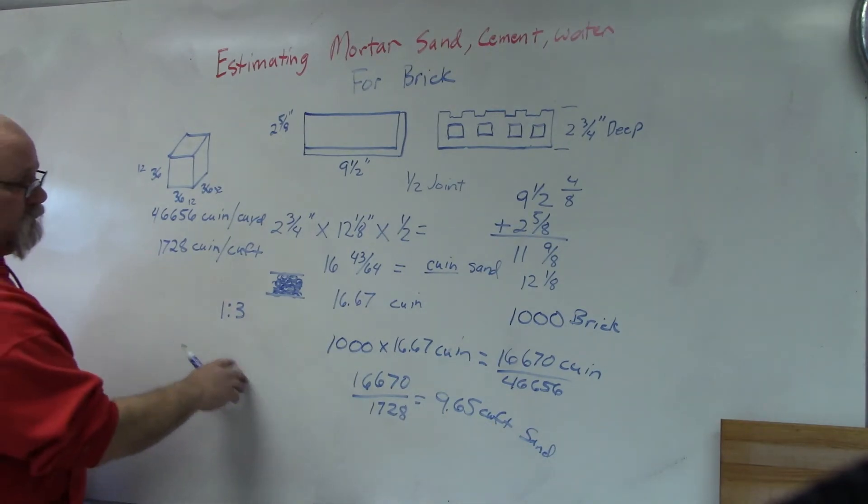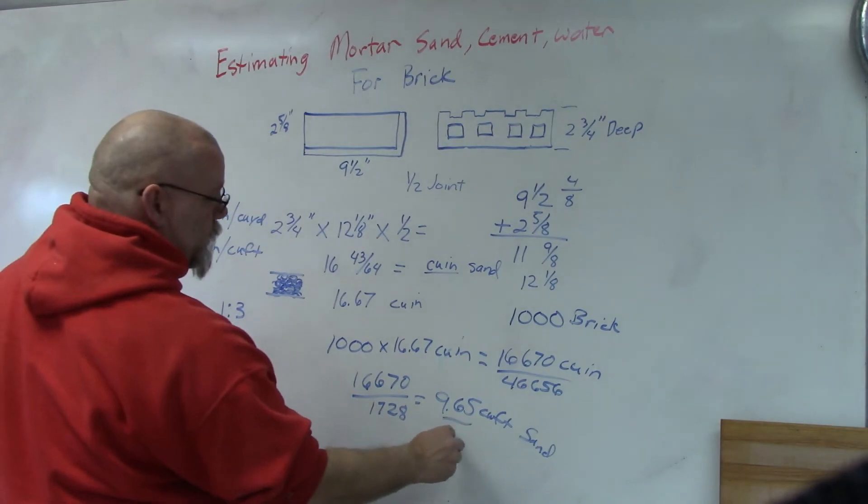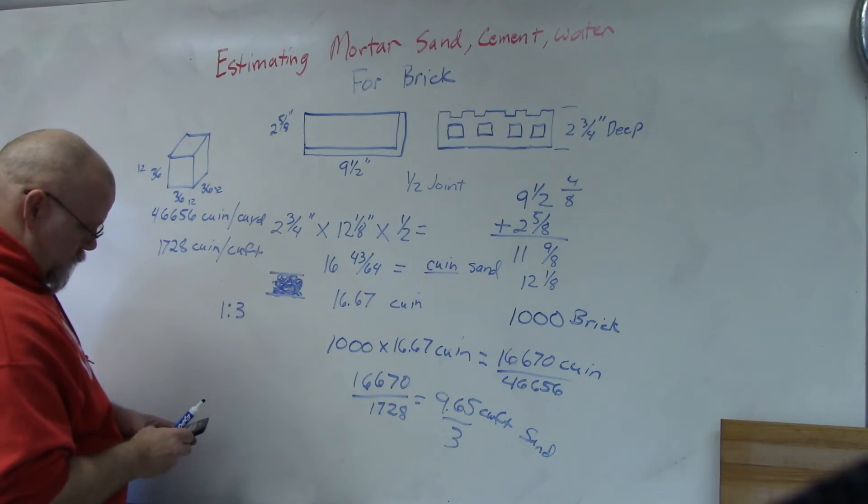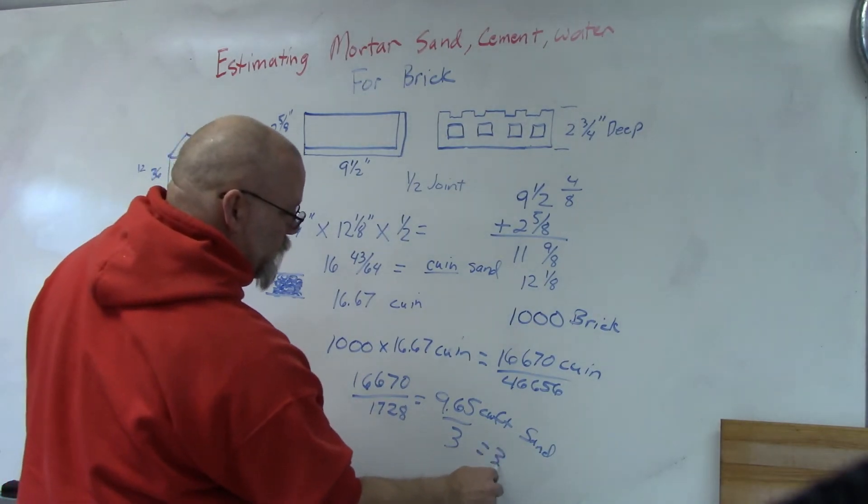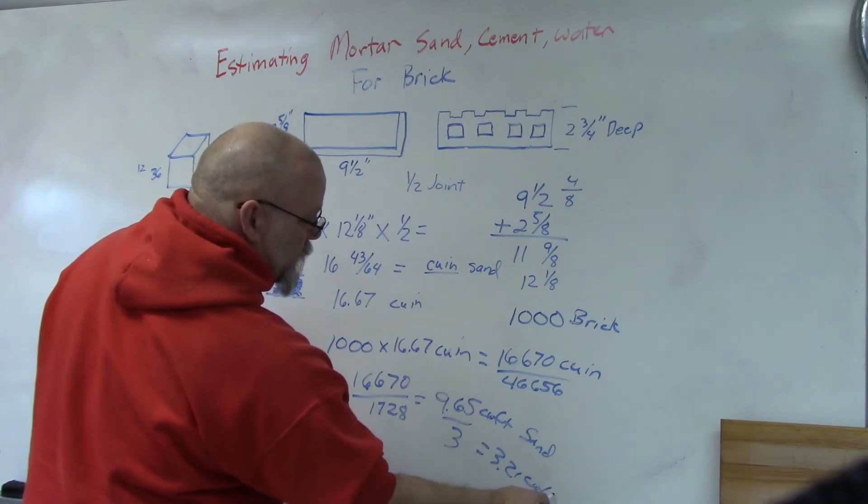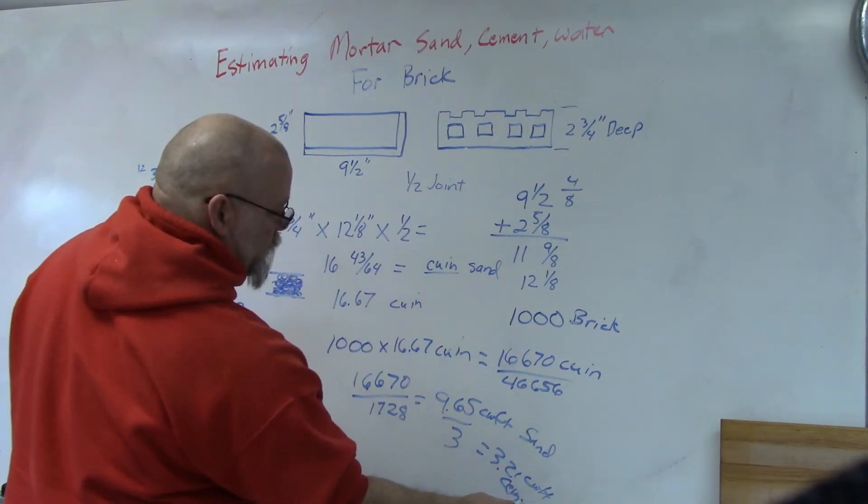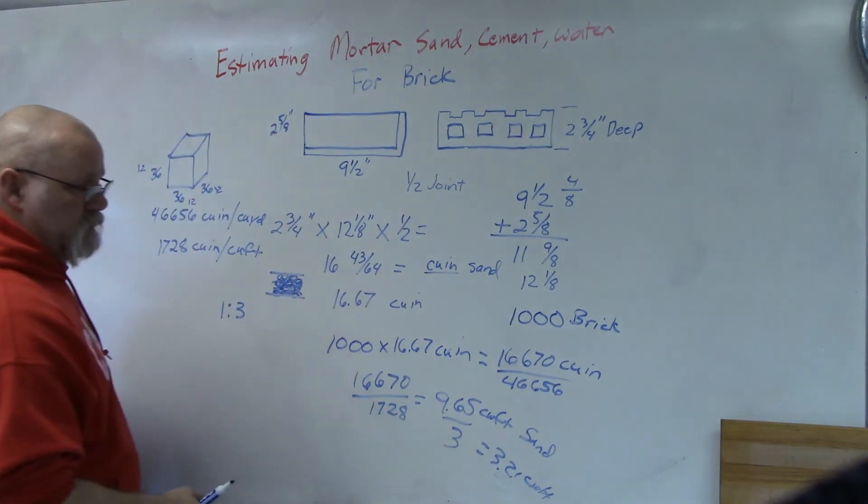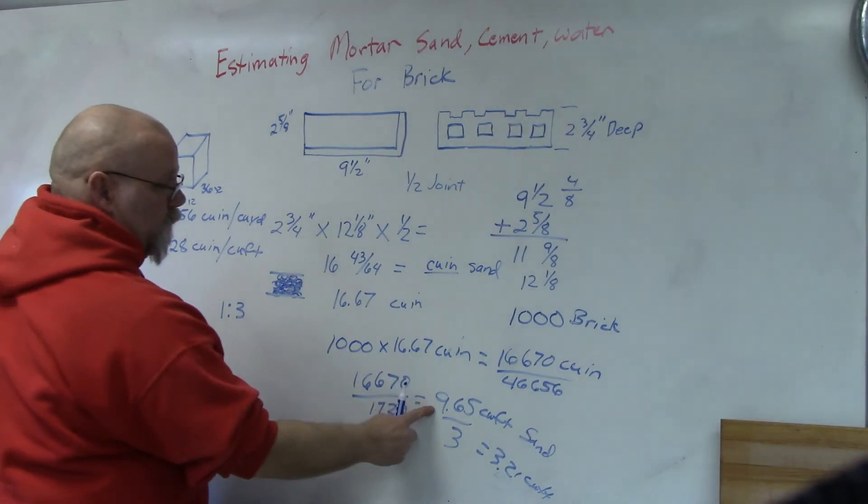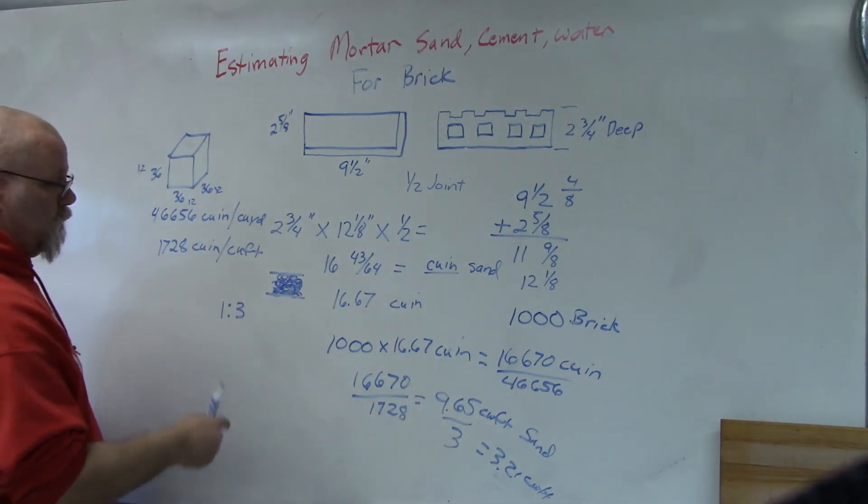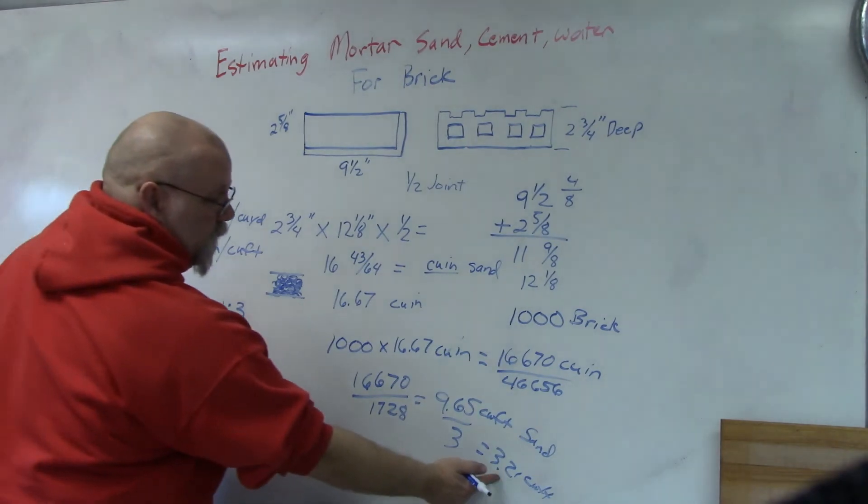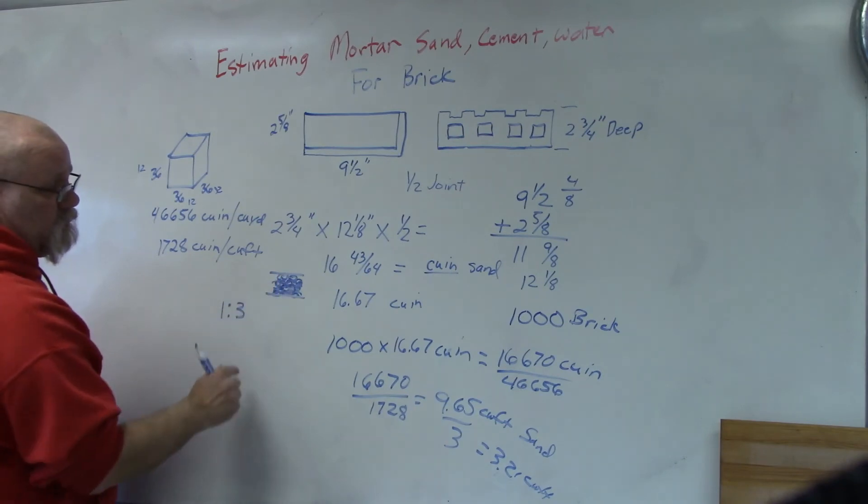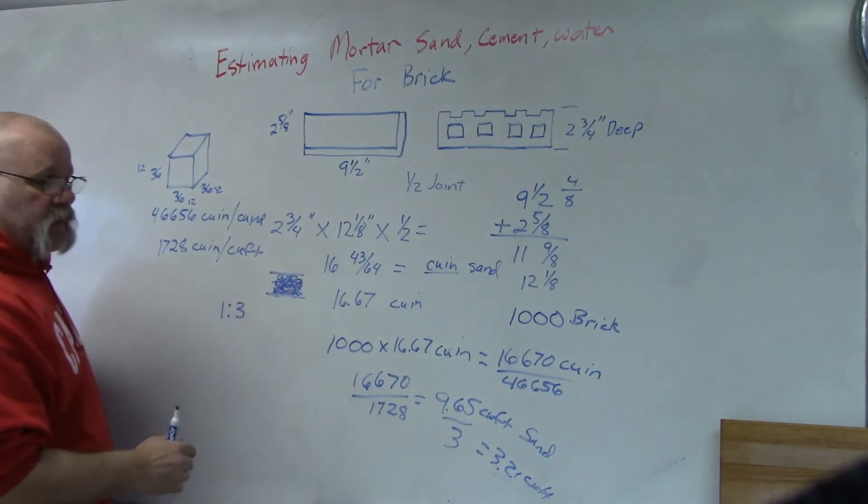So once you figure this out, all you have to do is you can divide this by three and you would need 3.21 cubic feet of cement. So you need 3.21 cubic feet of cement with 9.65 cubic feet of sand. The cement would just coat the little pebbles and then fill in all the voids, so you really don't get a whole lot of volume with that, but it will give you a little bit more.